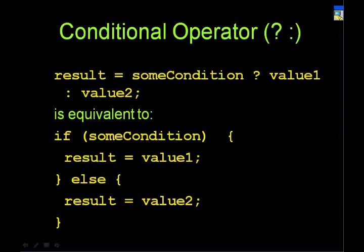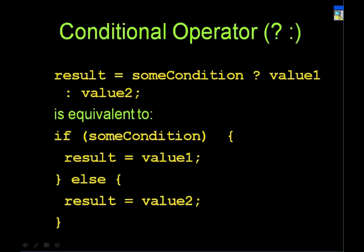Often in Java you write code like: if some condition is true, set result to value one, otherwise set result to value two. This appears often enough that Java added syntactic sugar called the ternary operator: 'result = (condition) ? value1 : value2'. You read it the same way — if the condition is true, result is value one; otherwise it's value two. You can always write it the long way if you don't remember the ternary form.